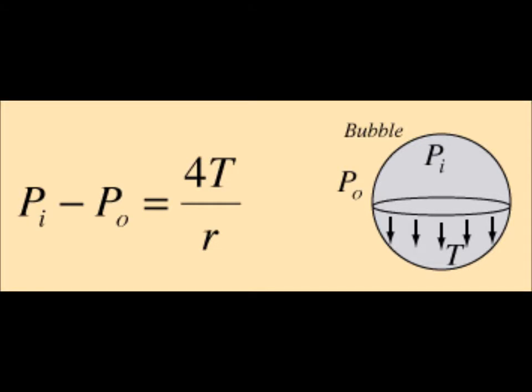A bubble always tries to form the shape with the minimal surface area for the volume of air it contains. Minimizing surface area means that the least energy is required to achieve that shape. The reason why you don't see pyramid or cube shaped bubbles is because, in free air, the shape with the least surface area is always a sphere. Also, according to Laplace's law, bubbles tend to be pulled into spherical shapes to minimize the surface tension of the bubble's wall.